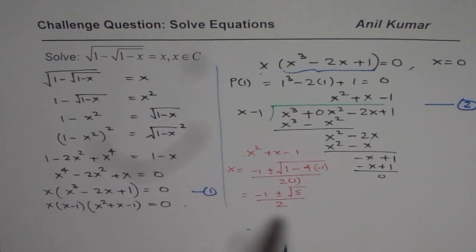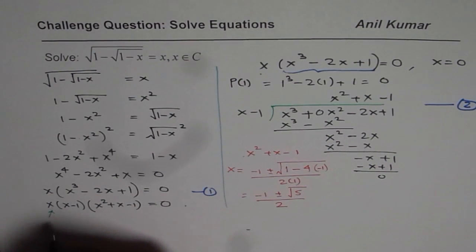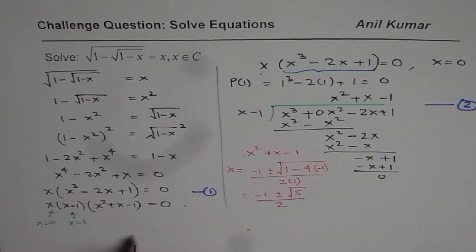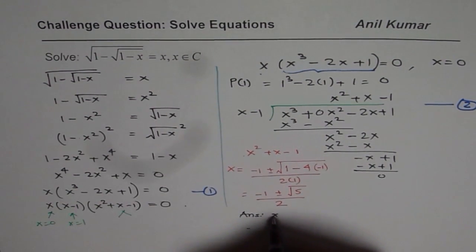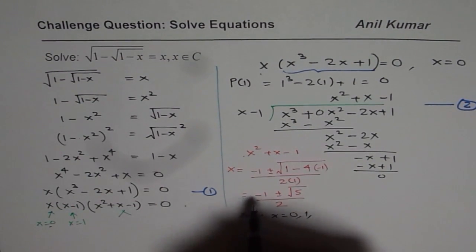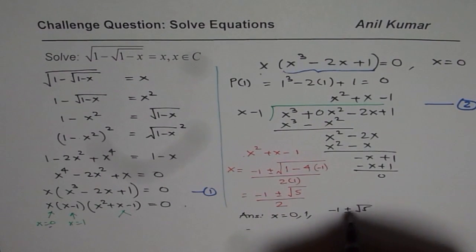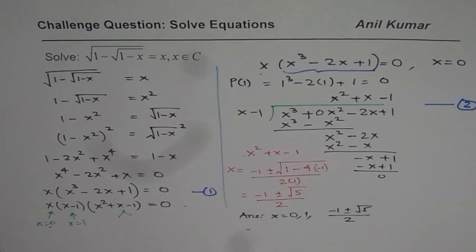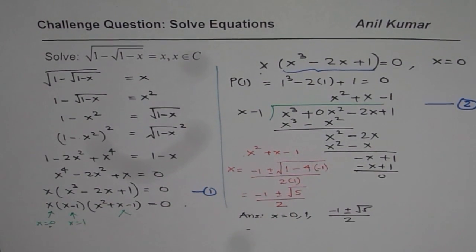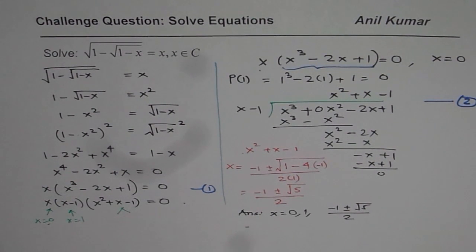So these are the other roots. So we get a couple of answers. One is x equals 0. The other one is x equals 1. And here we get two roots, which are these two roots. Now based on what we have done so far, we can write down our solution. And that is x equals 0 or 1 or minus 1 plus minus square root 5 over 2. So we indeed have four real roots as solution for the given equation.